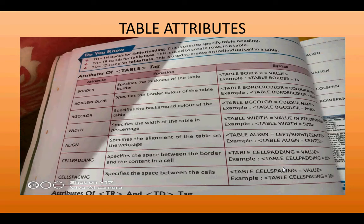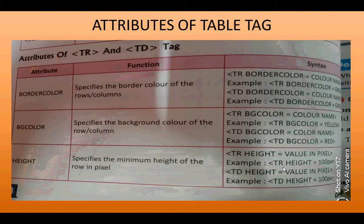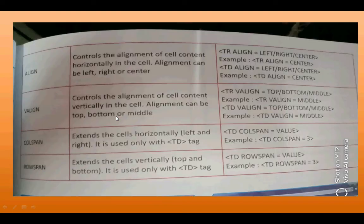After list tag, we did the table tag, used to create a table. Attributes used with the table tag are: border, border color, background color, bg color, width, alignment, cell padding, and cell spacing. In TR and TD — TR stands for table row, TD stands for table data — attributes include border color, bg color, height, align, vertical align, col span, and row span. Col span extends cells horizontally and row span extends cells vertically.